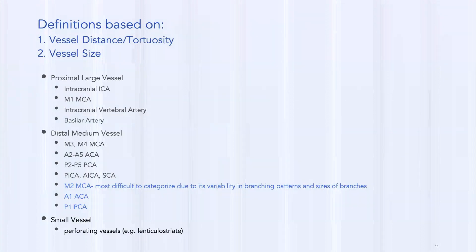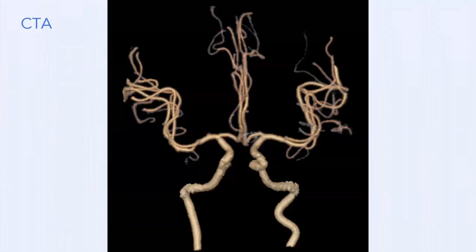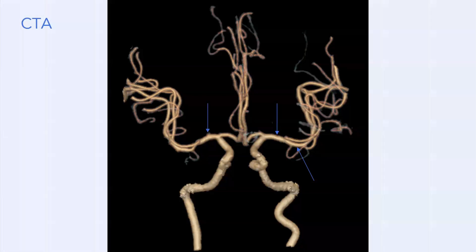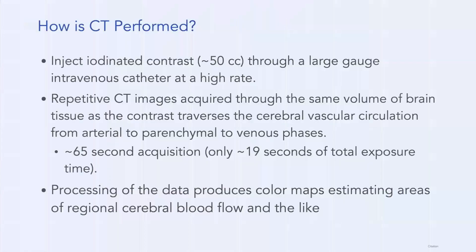Distal medium vessels — M3, M4, A2–A5 — are straightforward. M2 is the most difficult to categorize because of variable branching patterns: they can branch early or late and have very dominant divisions. To illustrate: in one patient the M1 and M2 are about the same size, so why isn't the M2 an LVO equivalent? In another patient the M1 is considerably larger than M2 — showing why there's variability in what people consider an LVO.